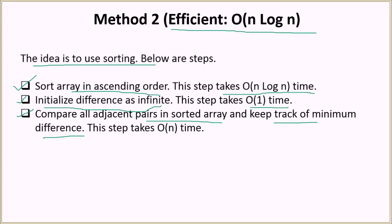The third step is to compare all adjacent pairs in the sorted array and keep track of the minimum difference. We iterate over the array only once and compare the difference between adjacent pairs, since the array is sorted. We compare against the difference variable initialized as infinite and narrow down to the minimum difference.